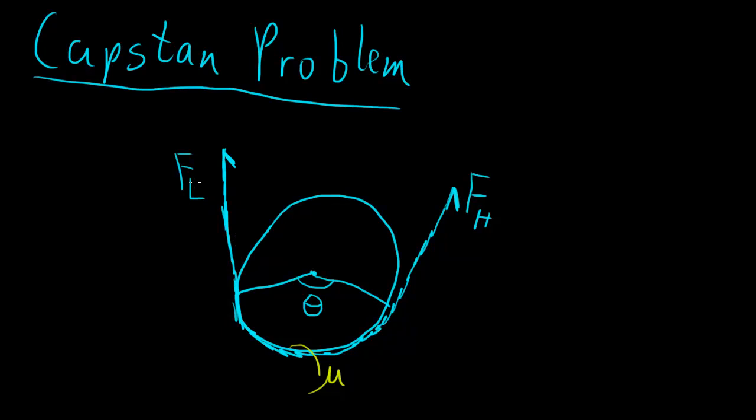So that friction is opposing the motion that this larger force is trying to cause, because this larger force wants to pull the rope this way and make it slide along the cylinder. But because of that friction, that force is being stopped.